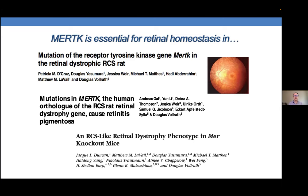The mouse we studied initially was on a mixed background with a very rapid degeneration similar to the RCS rat. Being good geneticists, we wanted to clean up the background and put it on a C57 black background. We did multiple backcross generations, always selecting for the knockout allele as heterozygotes, never looking at the phenotype. After about six backcross generations we intercrossed and made homozygotes.